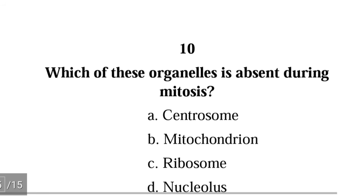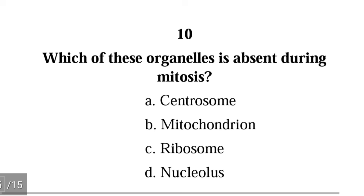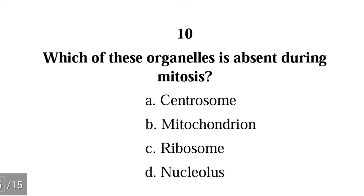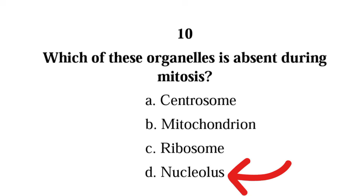Question 10: Which of these organelles is absent during mitosis? A) centrosome, B) mitochondrion, C) ribosome, D) nucleolus. The correct answer is D) nucleolus. During mitosis, the nucleolus disappears.